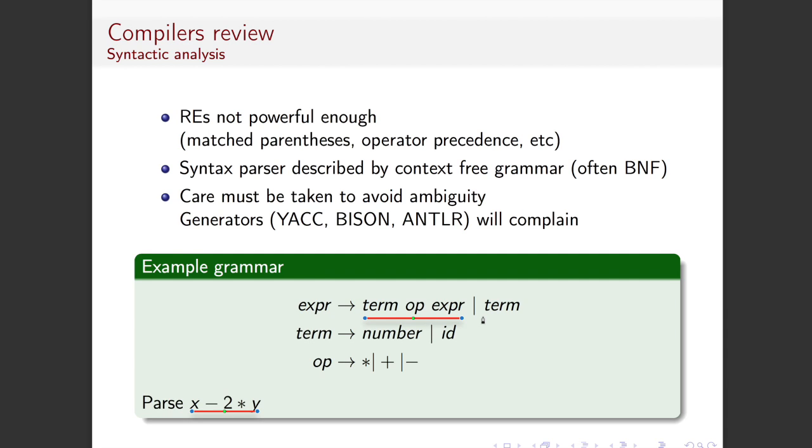So you could assume, say we assumed it was this one, right? You'd go down here and you'd say, all right, it's a term, so it's either a number or an ID. We've got an ID. And then you'd go, oh, I've still got more content over here, and that would then fail. So you could try that route, and then you'd end up backtracking to try this one. So we try this one. So term-op-expression. So now you match the term. Term must be a number or an ID. So you match that and make that an ID. So X matches the ID rule.